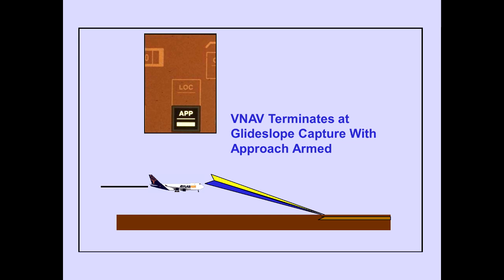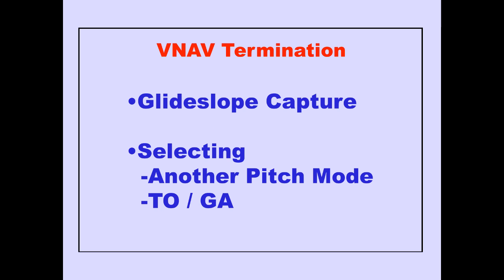With approach armed, VNAV automatically terminates upon glide slope capture. VNAV terminates on glide slope capture or when selecting another pitch mode or TOGA.